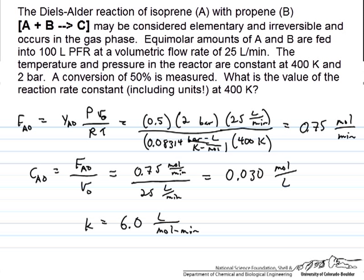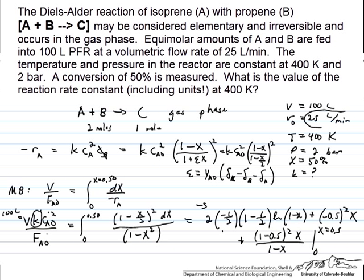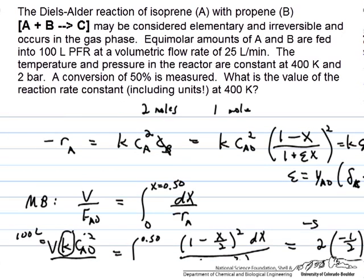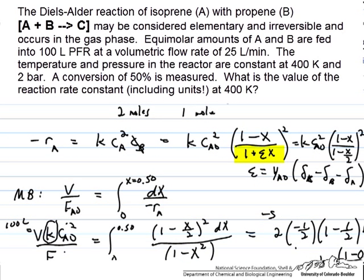This problem is a pretty straightforward application of solving for a PFR volume, with maybe the only tricky part that you have to remember to take into account the fact that the volumetric flow rate is going to be changing down the length of the reactor. Recall that this part of our expression for relating concentration to conversion deals with the change in the number of moles with reaction.